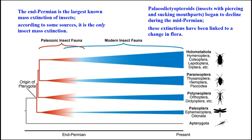Importantly, this was the only insect mass extinction — it happened in the Permian. The end-Permian is the largest known mass extinction of insects; according to some sources, it is the only insect mass extinction. Insects with piercing and sucking mouthparts began to decline during the mid-Permian, and these extinctions have been linked to a change in flora. With the end of the Paleozoic, you enter an age lasting even until today where insects can essentially trace their lineage. Before that, the insects of the Paleozoic became extinct completely.